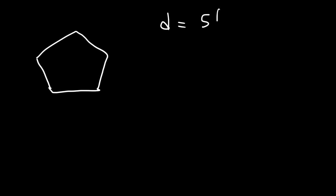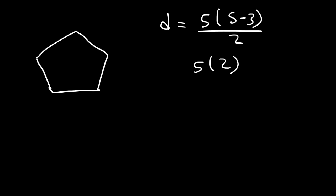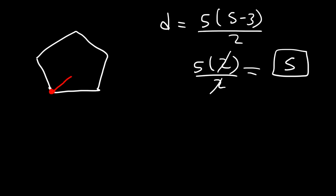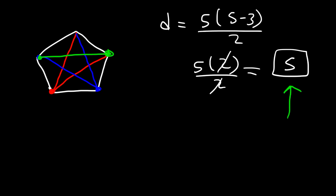Now let's move on to a five-sided figure like a pentagon. How many diagonals are in a pentagon? n is 5, so it's going to be 5 times 5 minus 3 divided by 2. 5 minus 3 is 2, and we can cancel the twos, so there should be five diagonals. Starting from one point, we draw one here and one here — that's 2. From the next point, one here and one there — that's 4. Then we connect the remaining two points for a total of five diagonals in a pentagon.